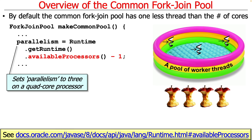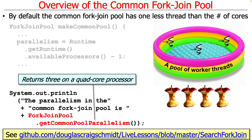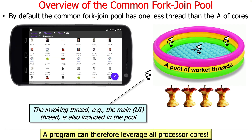By default, the Common Fork Join Pool has one less thread than the number of cores that the underlying virtual machine or execution environment knows about. The common pool constructor sets the parallelism to one less than the number of processors. For a quad-core processor, the parallelism level will be set to three. You can find out the parallelism level by calling ForkJoinPool.getCommonPool().getParallelism(), which returns a count always one less than the number of cores.